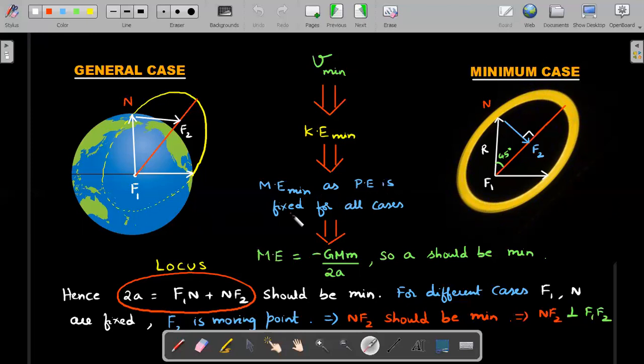And that's what I wrote here. ME should be minimum as PE is fixed in all cases. So what's the formula for ME that we saw in the previous page? Minus GMM by 2A. So if ME has to be minimum, this denominator has to be minimum because there is a minus sign here. Don't forget that. So you have to throw it in such a way that among all the ellipses that you can get for different values of speeds, you have to choose the ellipse whose semi major axis or simply major axis, you could say 2A should be minimum.